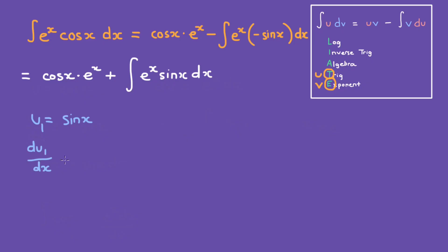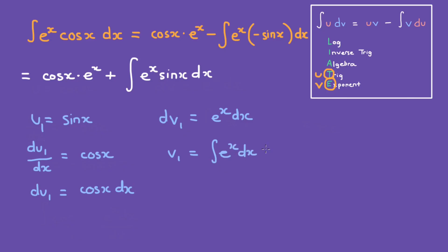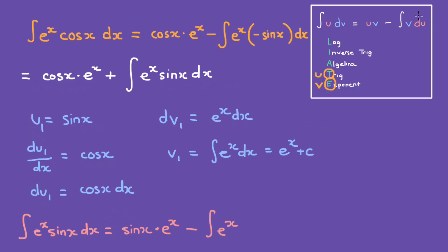What is the derivative? The derivative of sine of x is cosine of x, so du1 is equal to cosine of x dx. How about dv? dv is just e to the power of x dx. So v1 is the integral of that, which is just e to the power of x. So the integral of e to the power of x sine of x dx is equal to u1 times v1: sine of x times e to the power of x, minus the integral of e to the power of x times du1, where du1 is positive cosine of x dx.